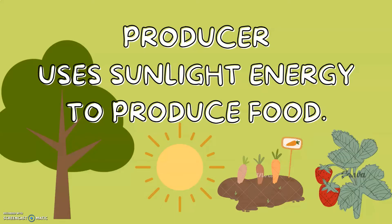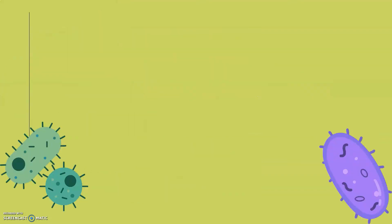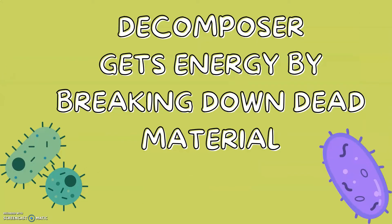Producers use sunlight energy to produce food — these are plants. Consumers get their energy by eating other organisms. Decomposers get their energy by breaking down dead material — these are normally microorganisms.